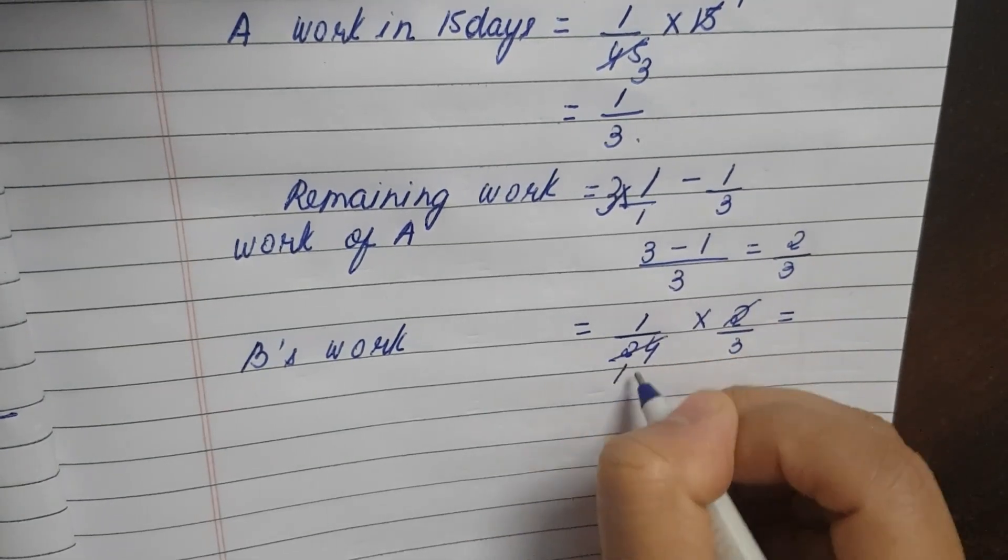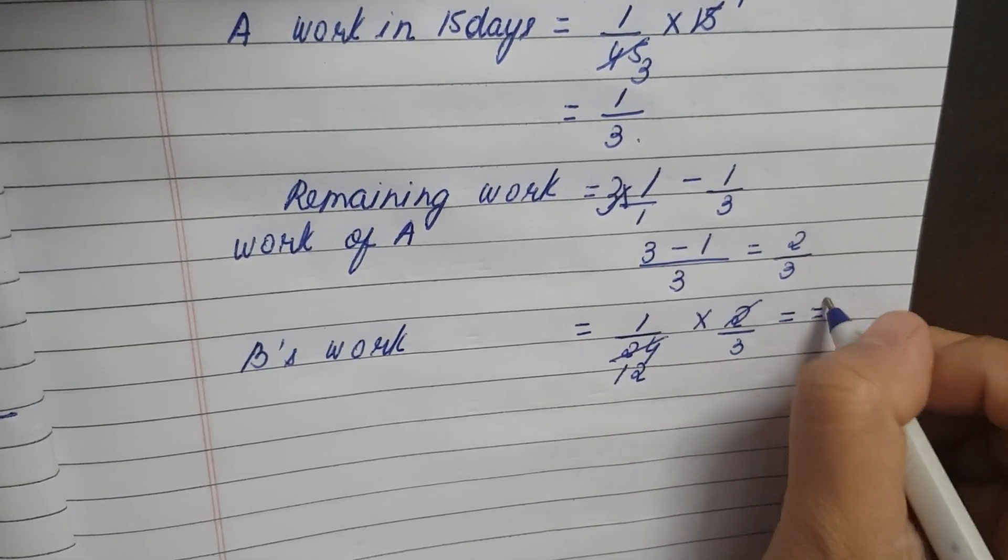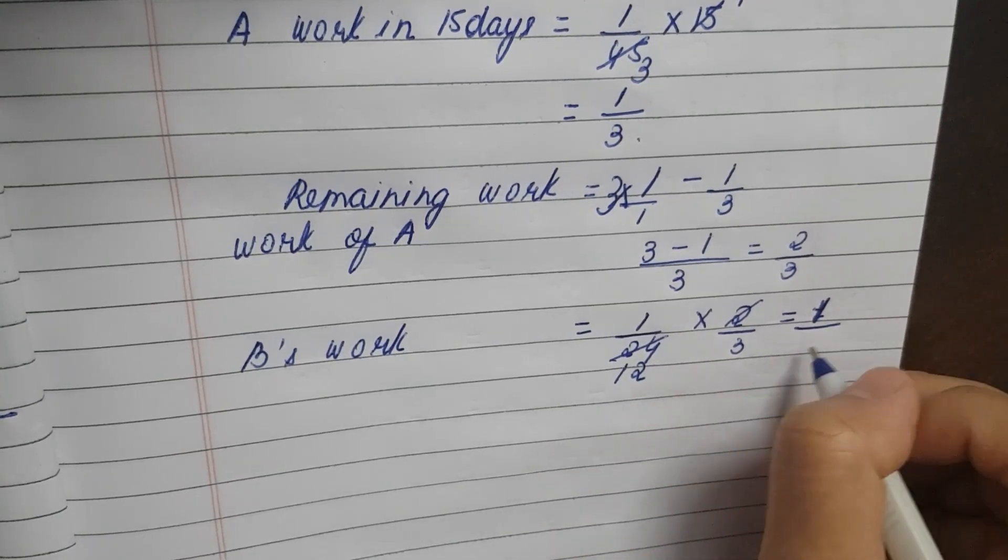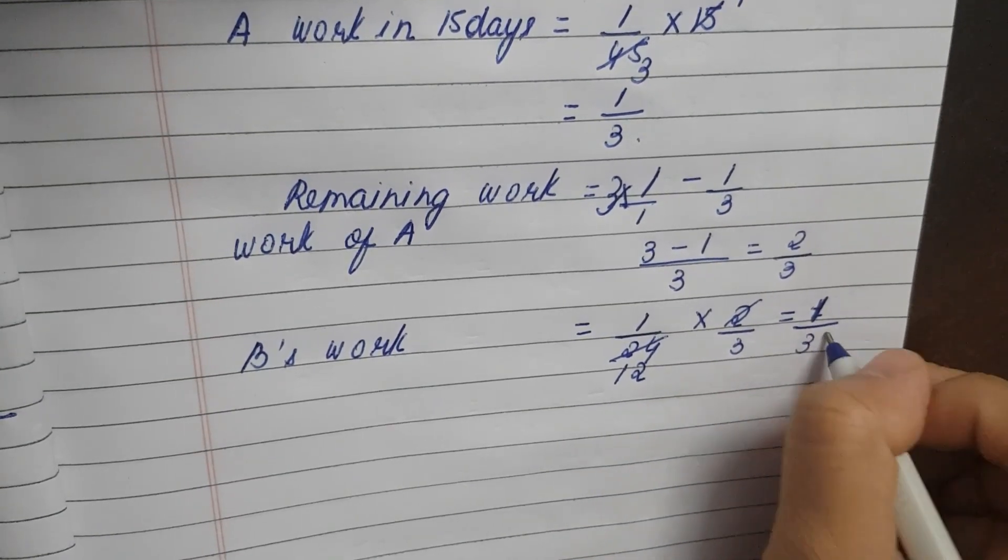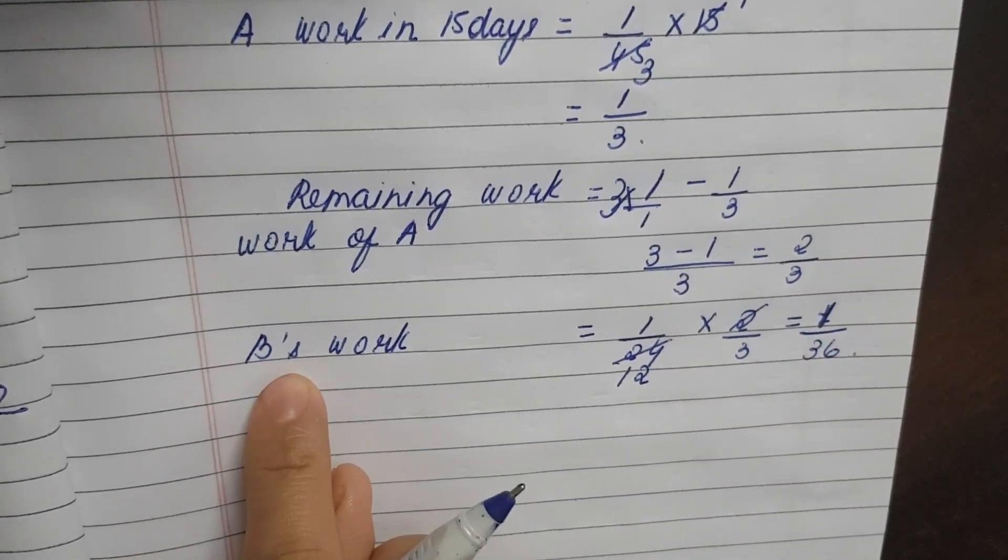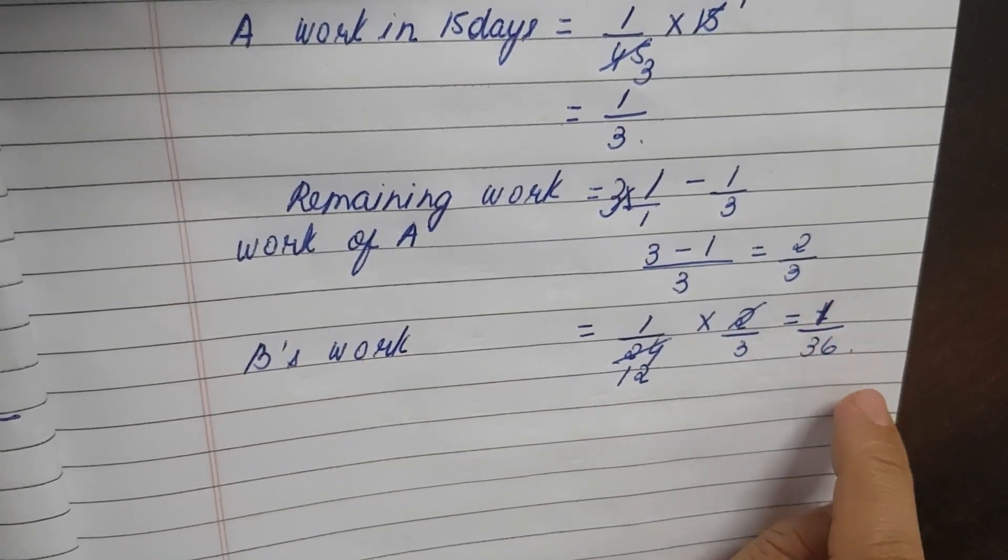2 one time, 24 twelve times. So 1 times 1 is 1, 12 into 3 is 36. So B's work is 1 by 36.